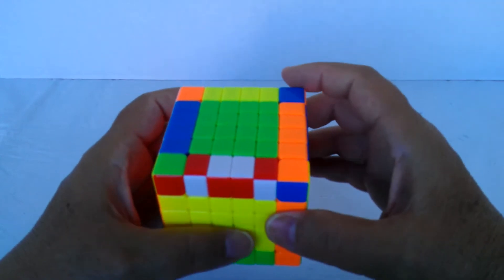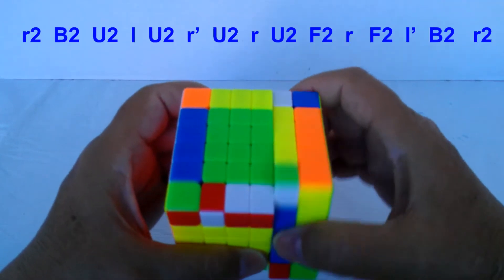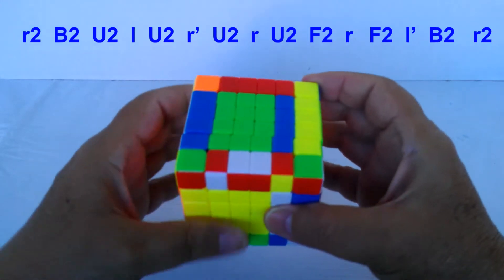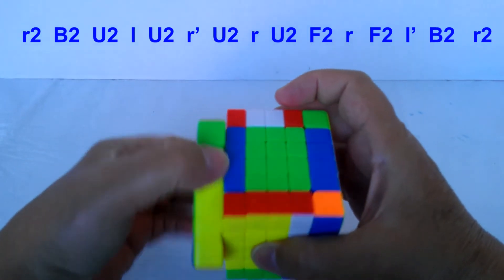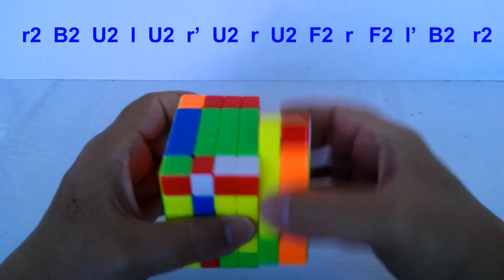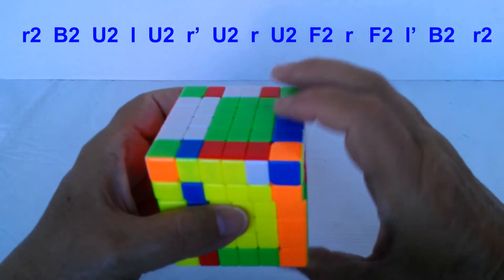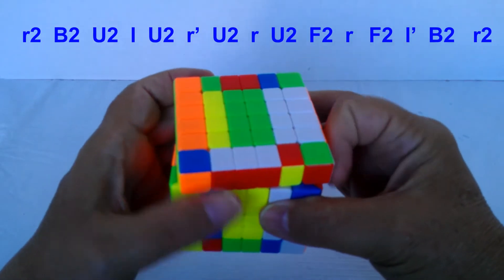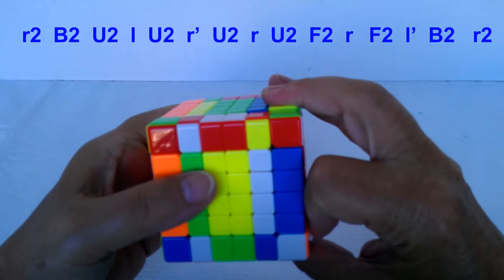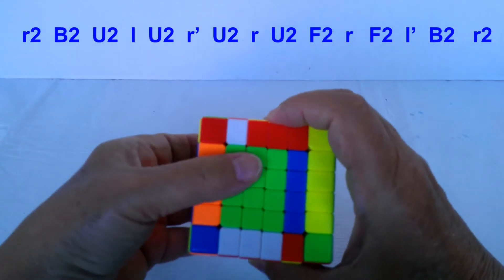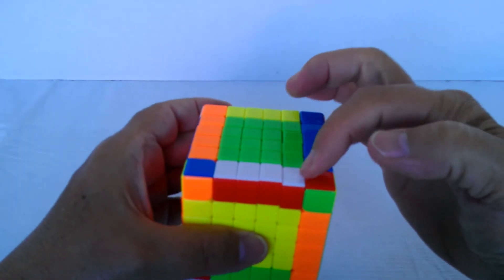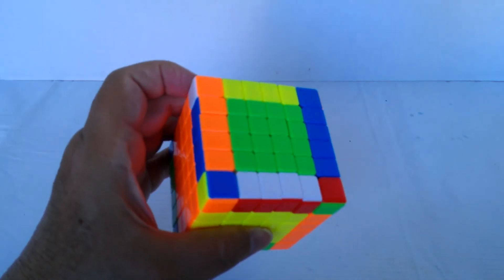It goes R2, B2, U2, L, L, U2, and R to me, U2, R away, U2, F2, R away, F2, L away, B2, R2. That has lined them up.